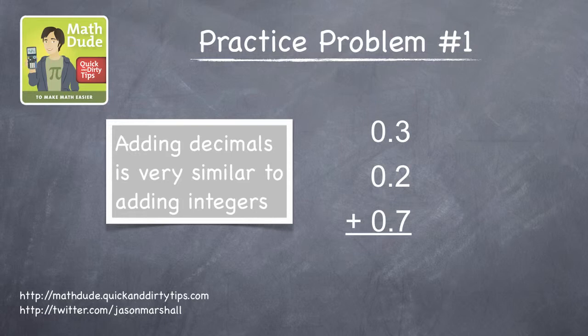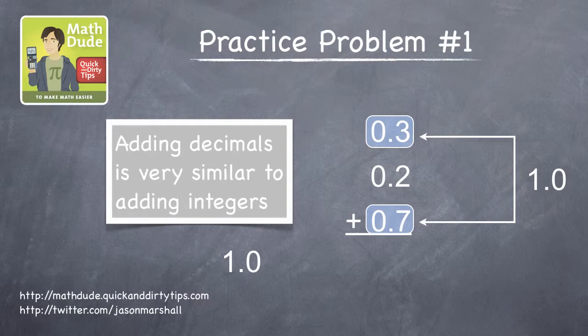3 and 7 add to 10. But in this case, since we're actually adding 0.3 and 0.7, we get 1.0. Now, all we have to do is add this to the remaining 0.2 and we get the final answer, 1.2.